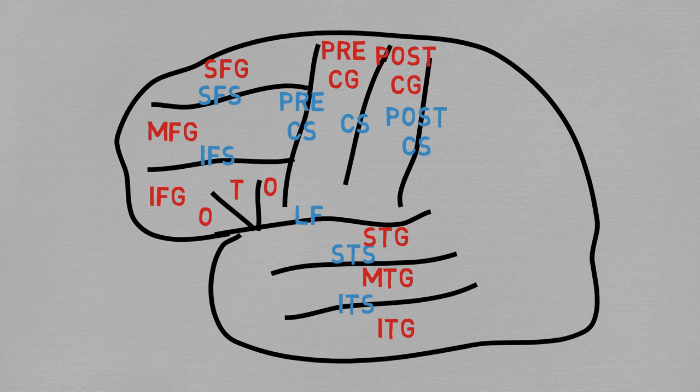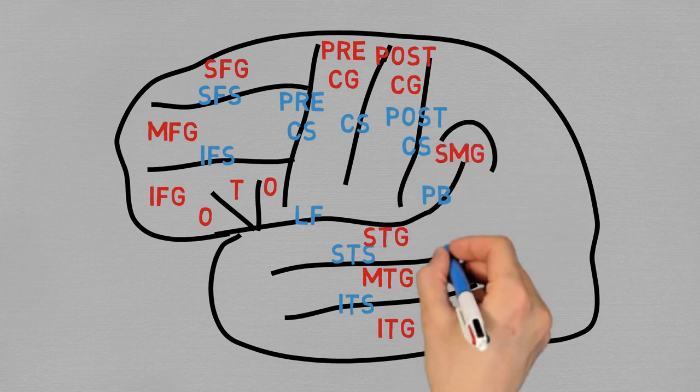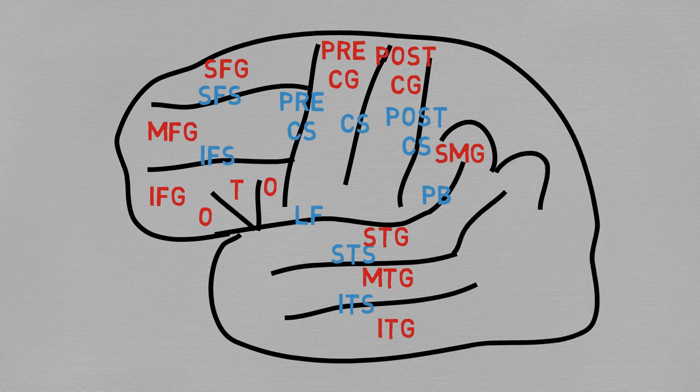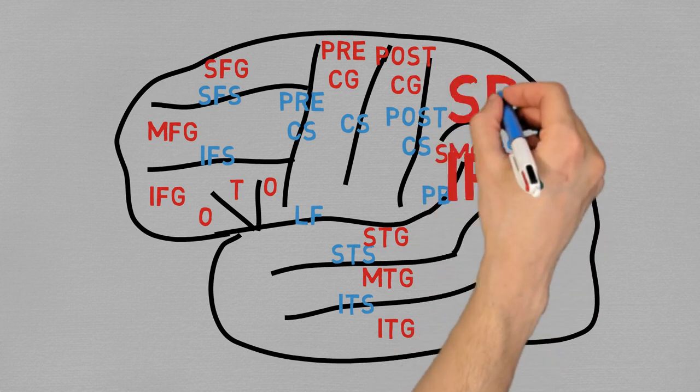Now the lateral fissure also has a posterior branch that goes into the parietal lobe, like this, and over its margins you have the supramarginal gyrus. The superior temporal sulcus follows a similar path and it creates similarly the angular gyrus. Seen together, the limits of these gyri can be called the intraparietal sulcus, and they define the inferior parietal lobule below and superior parietal lobule above.